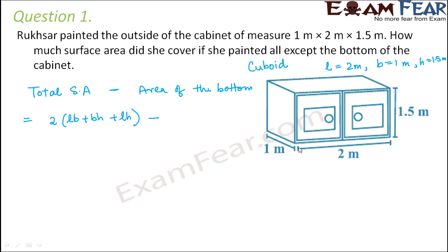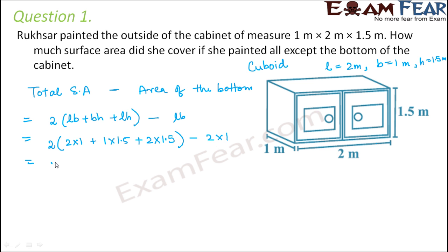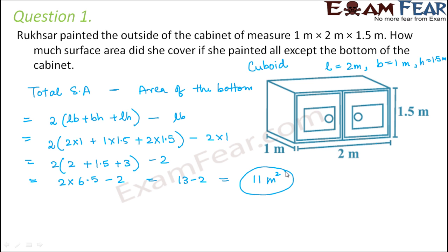The area of the bottom surface is L × B. So the painted area equals 2(LB + BH + LH) − LB, which gives 2(2 + 1.5 + 3) − 2, equal to 2 × 6.5 − 2, which is 13 − 2 = 11 square meters. So this is the total surface area that she covered.